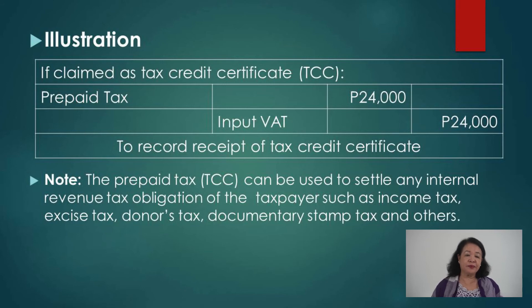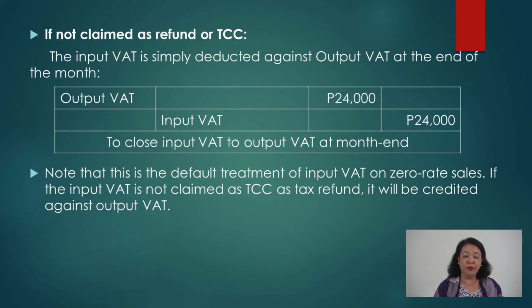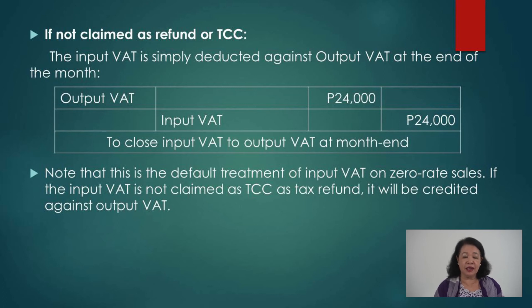If the input VAT is not claimed as a refund or tax credit certificate, it is simply deducted against output tax at month-end: debit Output VAT, credit Input VAT 24,000 — to close input VAT against output VAT at month end. This applies when the business has VAT payable from another activity; instead of applying for a refund on the zero-rated portion, the input VAT is offset against the output VAT from the other business activity. This is the default treatment.